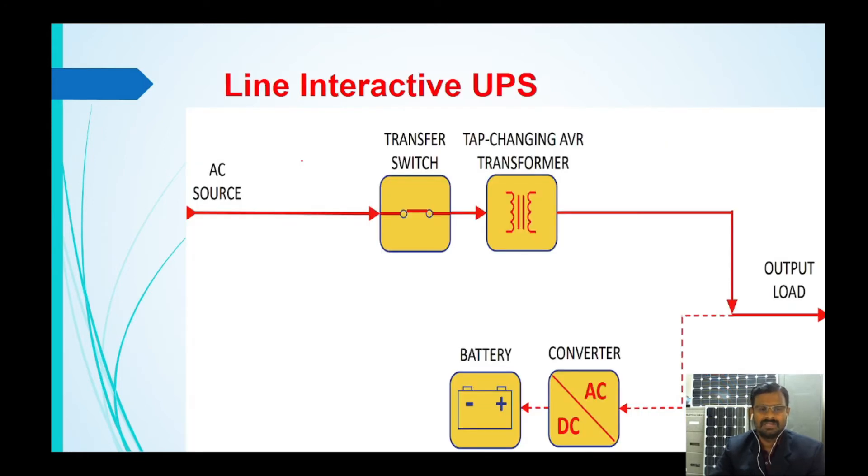Now let us see line interactive UPS. This line interactive UPS has a transformer and a bi-directional converter which can convert AC to DC as well as DC to AC, and of course we have a transfer switch and load.